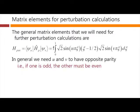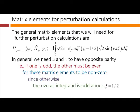That is, if one is odd, the other must be even. Otherwise, these matrix elements are going to be zero by parity arguments. And that's because the overall integrand would be odd about the central point, ξ equal to half.